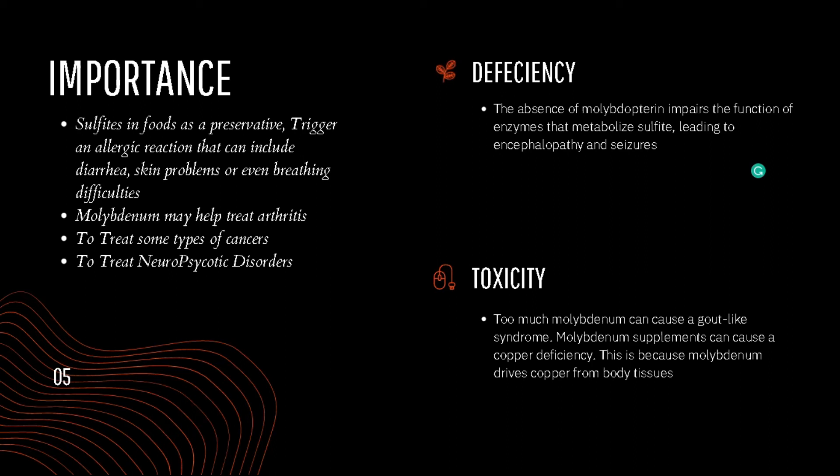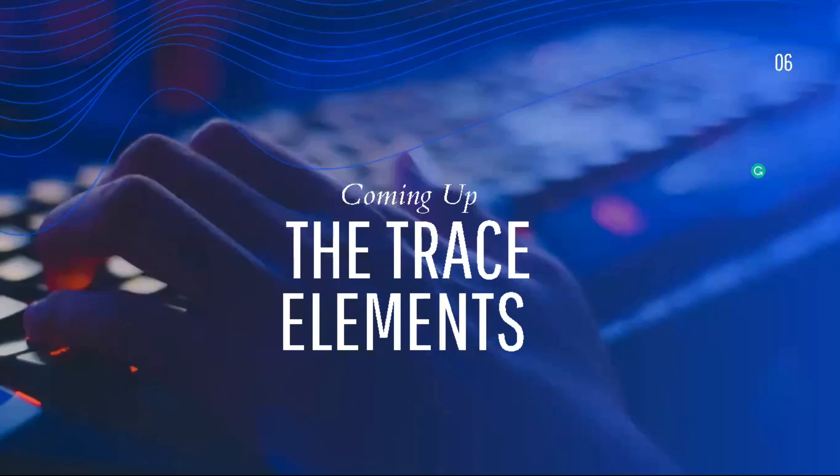Like any other biochemical process, molybdenum takes the help of copper to reduce itself. Once it starts reducing, the copper trace elements in the body decrease, leading to lower copper levels, which are required for many important functions in your system. We will talk about copper in the next presentation.